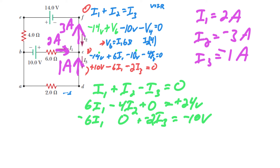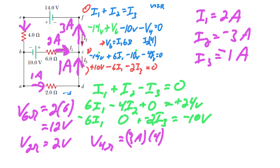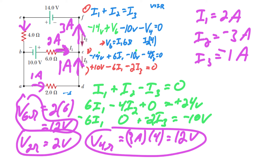Let's find our voltages using Ohm's law. The voltage across the 6 ohm resistor is 2 amps times 6, which gives us 12 volts. The voltage across the 2 ohm resistor is 1 amp times 2, which gives us 2 volts. And the voltage across the 4 ohm resistor is 3 amps times 4, which equals 12 volts. So our voltages are 12, 2, and 12 volts, and our currents through each branch are 2, 1, and 3 amps.